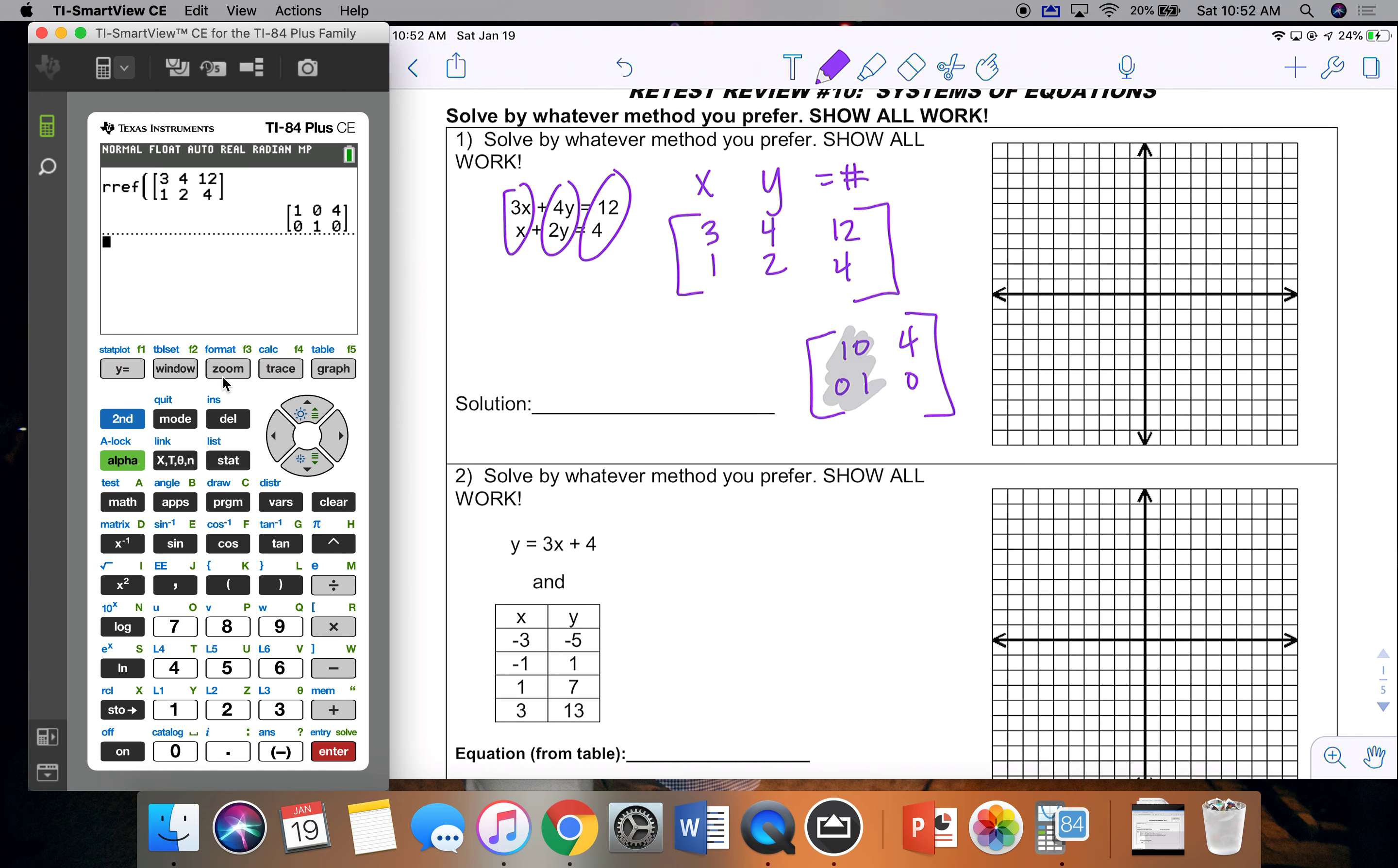1, 0, 0, 1 means that I have a true solution. And that solution is at the point (4, 0).